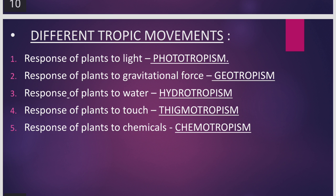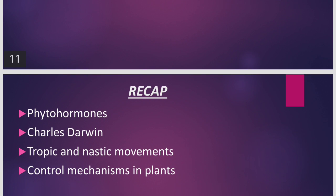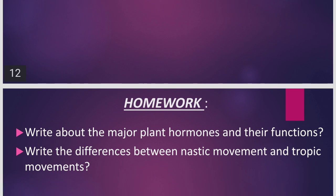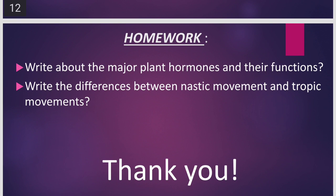These are the examples of different tropic movements. With this, we have finished lesson number 5, coordination. In today's class we have seen phytohormones, plant hormones and their functions, the Charles Darwin experiment, tropic and nastic movements in plants, and also the control mechanisms in plants — different types of tropic movements. Homework: write about the major plant hormones and their functions in tabular form; write the differences between nastic movement and tropic movement with examples. I hope you understood the concept. Thank you very much for watching this video.